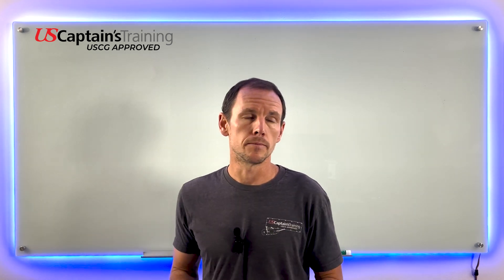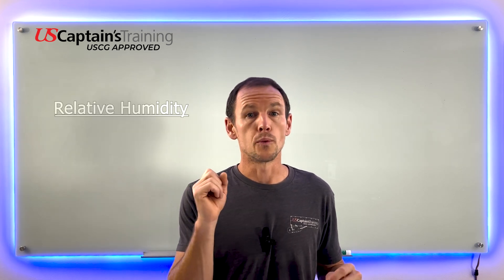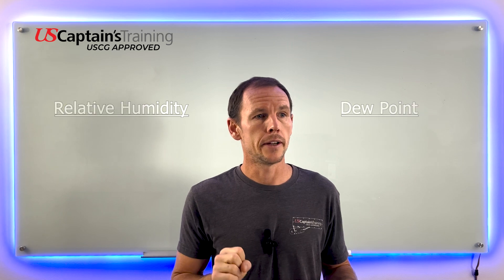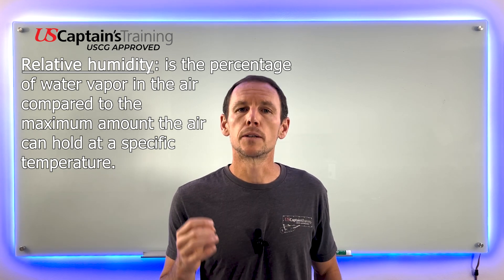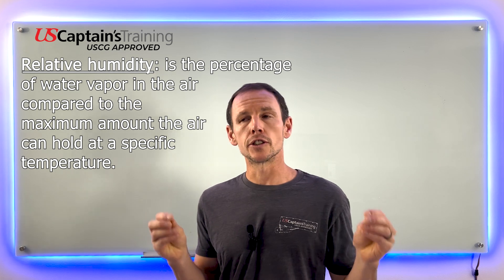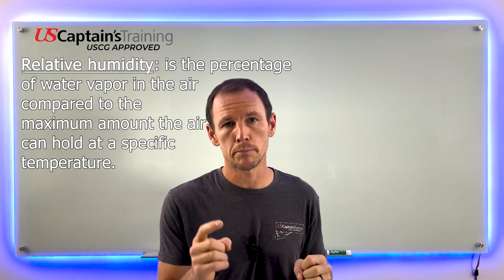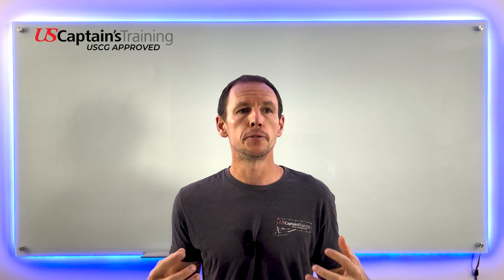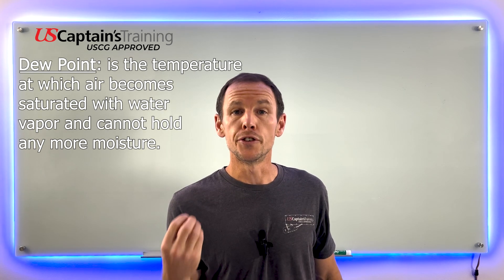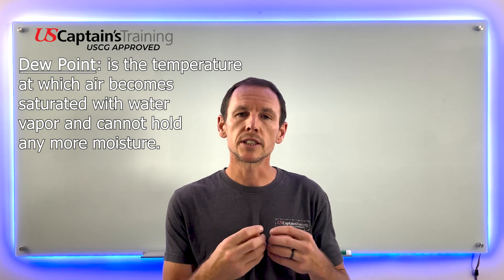Humidity is usually described in units per volume. There are several ways to describe it — we're going to look at relative humidity and dew point. Relative humidity is the percentage of water vapor in the air compared to the total amount of water vapor the air can hold at that temperature. When relative humidity reaches 100%, you hit the dew point.